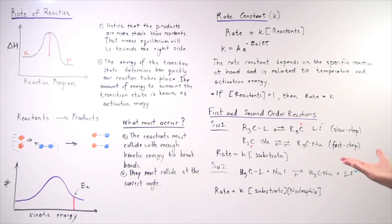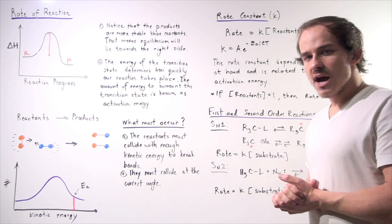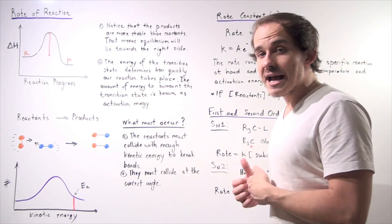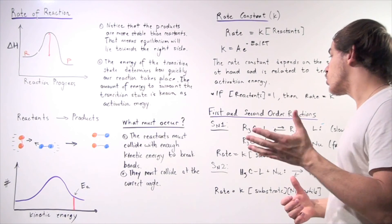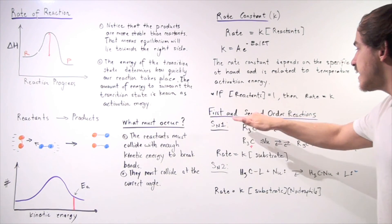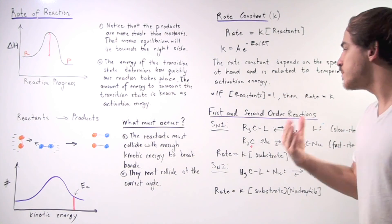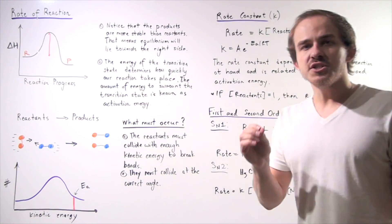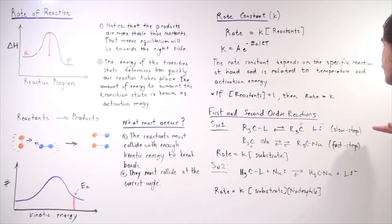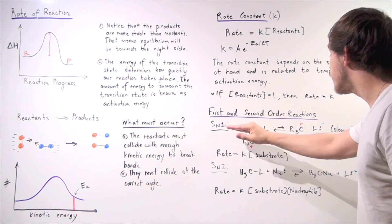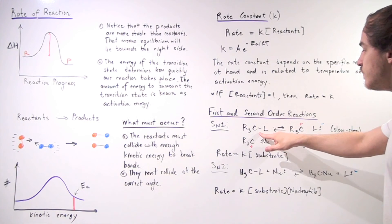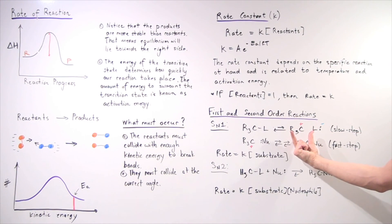Let's discuss two very common reactions in organic chemistry. Let's discuss first and second order reactions. When we spoke about the SN1 reaction, we had the first step — the slow step, the ionization step — in which the leaving group departed, forming a carbocation.